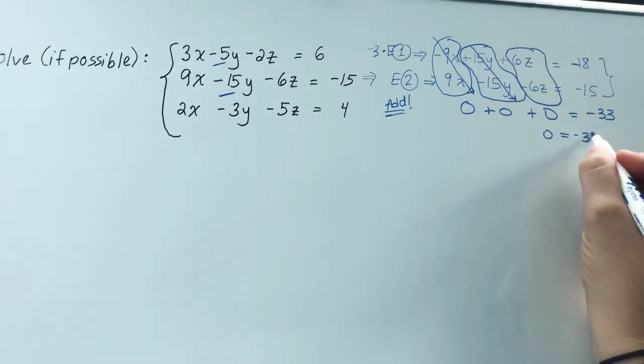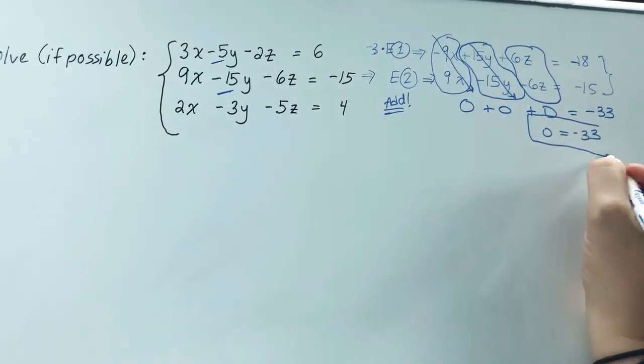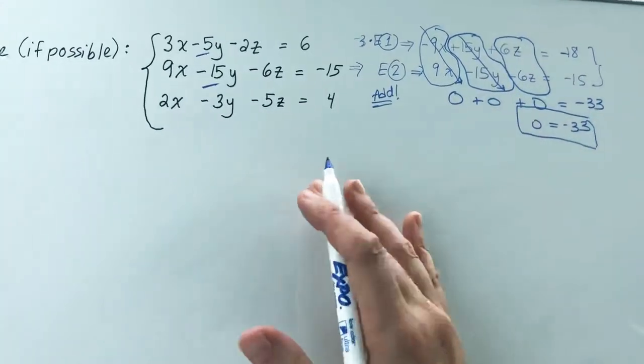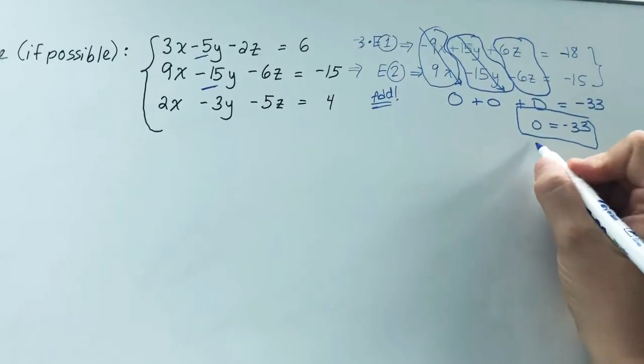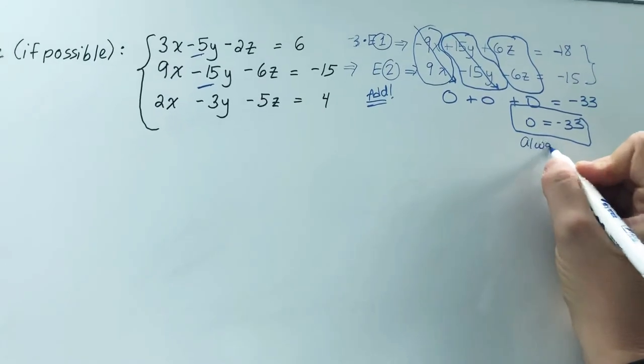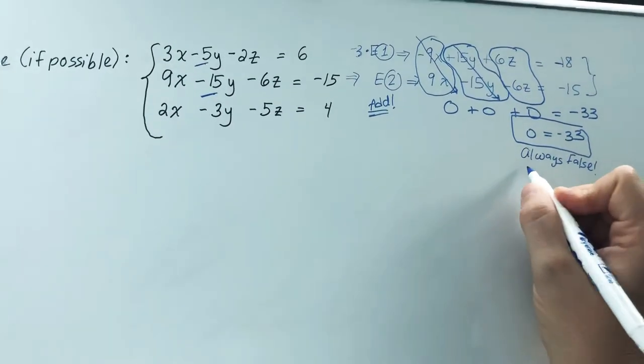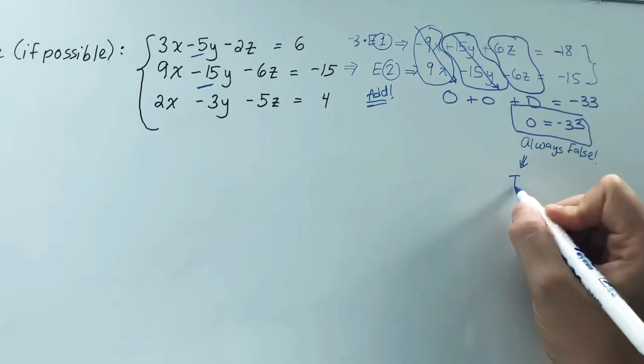Now as soon as you get to a point at the beginning like we just did, or later on in the problem where you get something that is always false, that means that this system cannot be solved. And if it can't be solved, this is an inconsistent system.